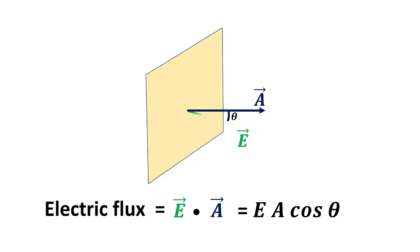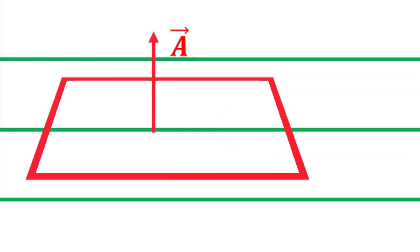In the lower class, you may learn, area is a scalar quantity. If you hold the area element normal to the flow, maximum field lines will flow through it than if you hold it with some other orientation. This shows that an area element should be treated as a vector. It has a magnitude and also a direction.